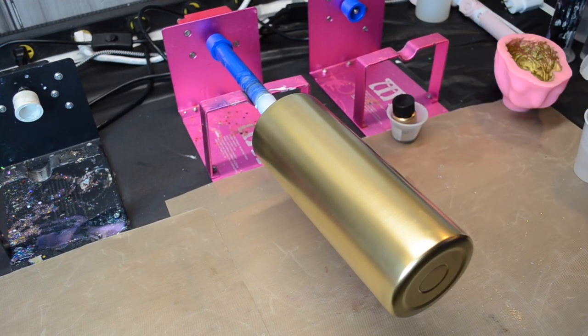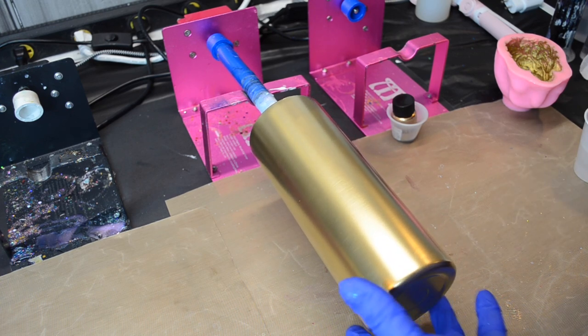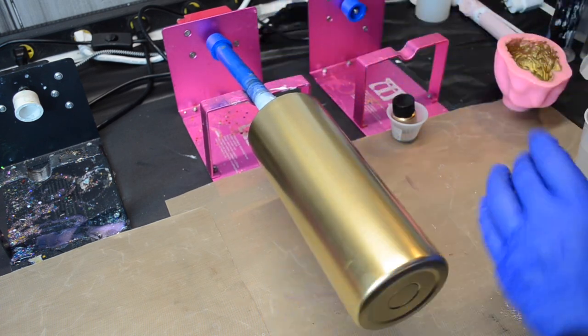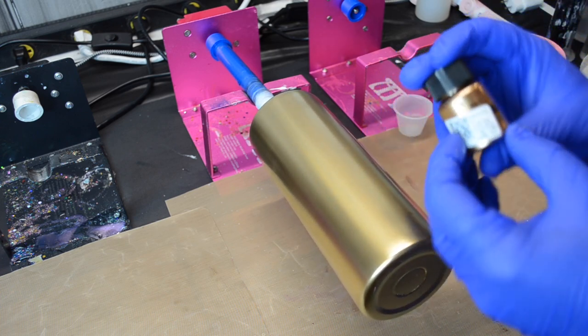I started with a 25 ounce straight duo tumbler from Stainless Depot. I've sanded, washed and spray painted gold.